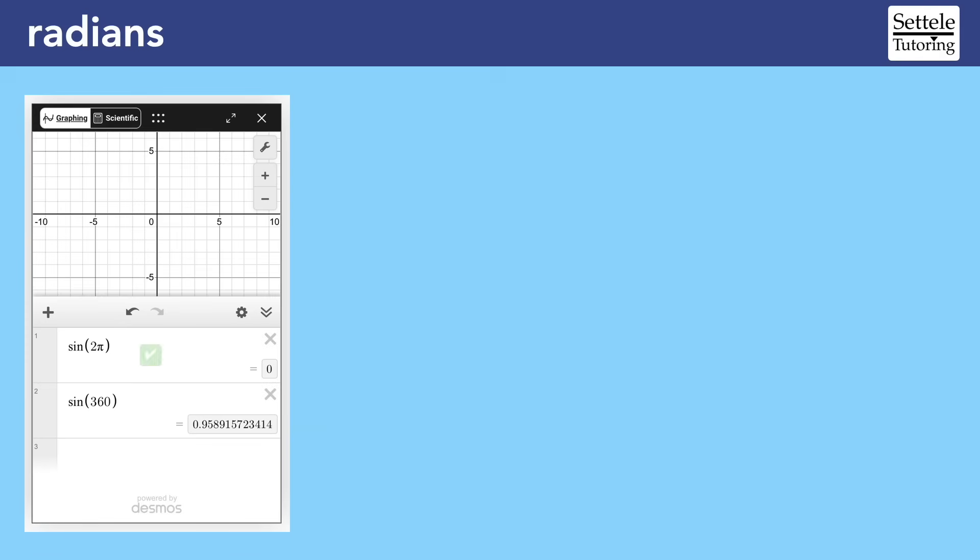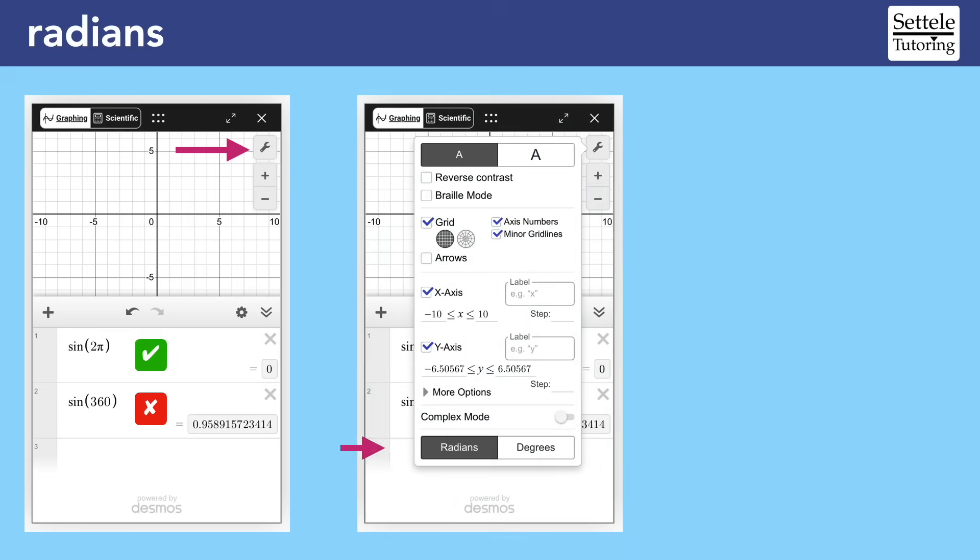The top equation gives us the correct answer. If you click the Settings button in the top right of Desmos, you'll see a menu that shows us that the calculator is set to radians. This is the default setting, so the calculator will use radians unless you change it to degrees.